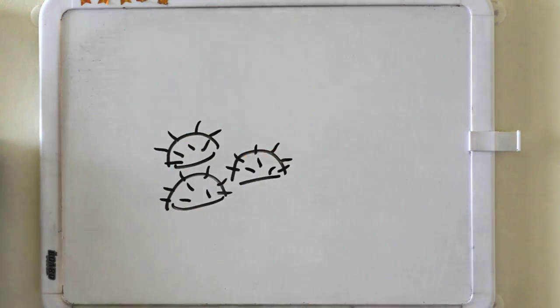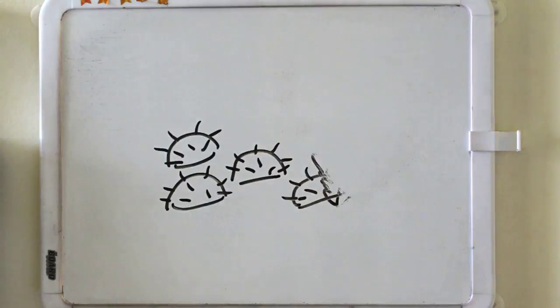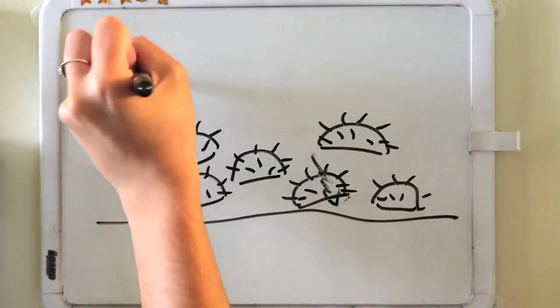It turns out that the sea urchins eat the kelp, and wherever there are a large amount of sea urchins, there are no kelp forests. These areas are called urchin barrens.